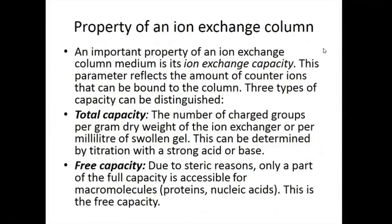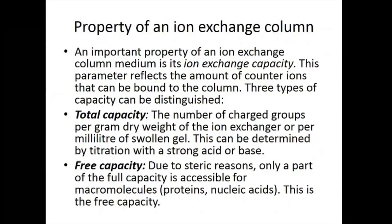Let us see some properties of the ion exchange column. When we talk about the column, we are talking about the stationary phase. In an ion exchange column, the stationary phase is generally a polymer or resin, and on the surface of that polymer or resin there are certain functional groups which are ionic in nature - they do carry charge. So we have a polymer or resin with charged groups on its surface.